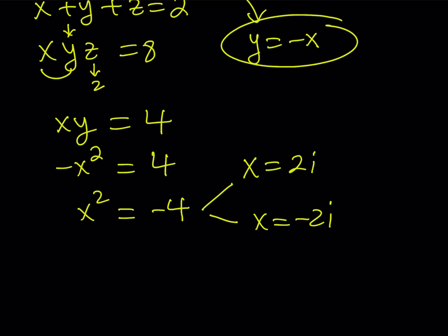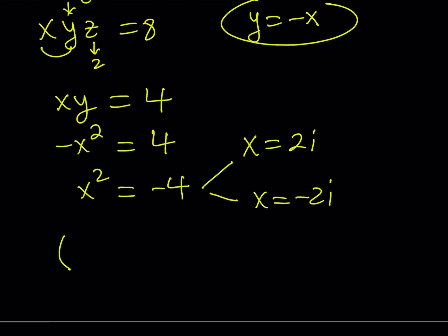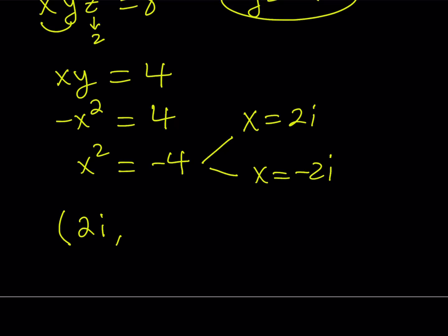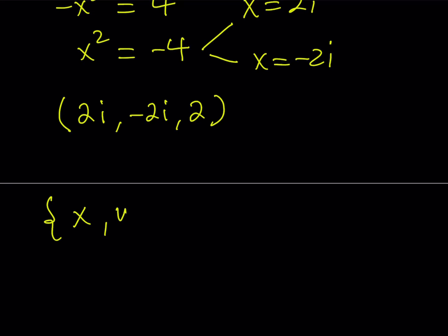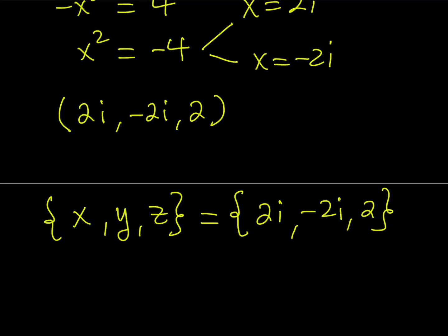Obviously these are the x values, but it also means they are y values — they're just going to permute. Instead of writing it as ordered pairs, since 3 factorial is 6, why don't we just write the result as a set? That way we don't have to worry about the permutations. The solution set for x, y, z is equal to the set {2i, negative 2i, 2}, which means all these values are possible for x, y, and z. This is the end of the first method.